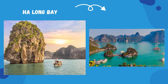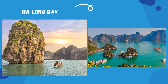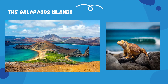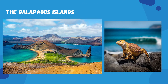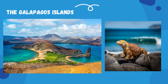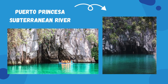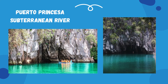Ha Long Bay, located in Vietnam, was declared a UNESCO World Heritage Site in 1994. The Galapagos Islands are located in Ecuador and are formed of lava. There you can find the largest tortoise in the world. Puerto Princesa Subterranean River — the river system flows directly into the sea and has formations of small waterfalls underground.